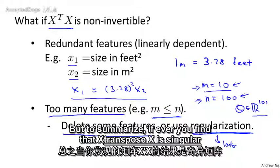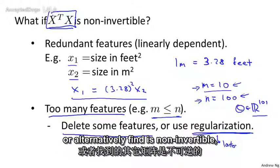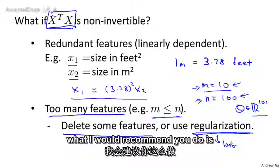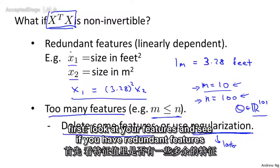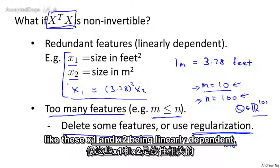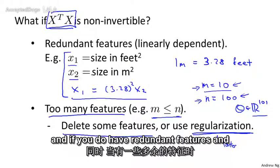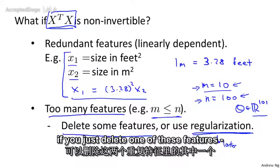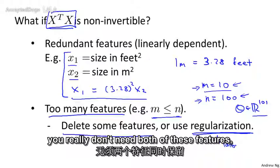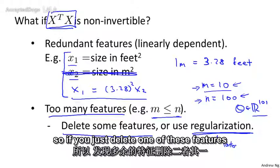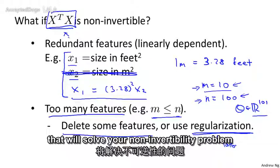But to summarize, if ever you find that X transpose X is singular or alternatively you find it's non-invertible, what I would recommend you do is first look at your features and see if you have redundant features, like this x1, x2 being linearly dependent or being a linear function of each other. And if you do have redundant features, and if you just delete one of these features, you really don't need both of these features. If you just delete one of these features, that would solve your non-invertibility problem.